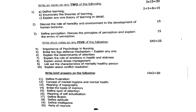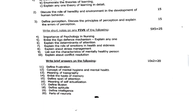Short notes on any five of the following: fourth question: importance of psychology in nursing. Fifth: enumerate the ego defense mechanisms and explain any one. Sixth: explain the determinants of attention. Seventh: explain the role of emotions in health and sickness. Eighth: explain stress management. Ninth: list the characteristics of a mentally healthy person. Tenth: explain conflict resolution.